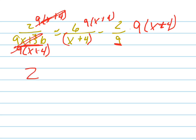Cancel, so that just equals 2. Cancel, cancel, so that just equals 6 times 9. Cancel, cancel, so that equals negative 2 times x plus 4.